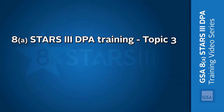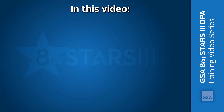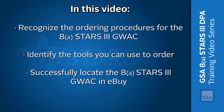Welcome to the GSA 8A STARS III DPA training video series. This is the third of four videos to help you understand GSA's 8A STARS III Government-Wide Acquisition Contract, or GWAC. We've already covered the basics of the 8A STARS III GWAC. This video explains the ordering process. GSA provides many tools to help you award a task order against a GWAC in a simple and streamlined fashion. By the end of this video, you should be able to recognize the ordering procedures for the 8A STARS III GWAC, identify the tools you can use to issue and award a task order, and successfully locate the 8A STARS III GWAC in eBuy.